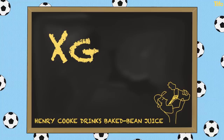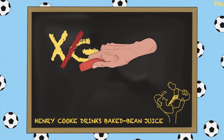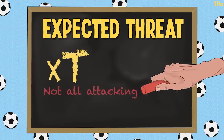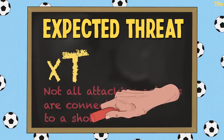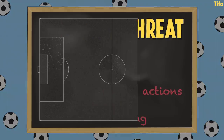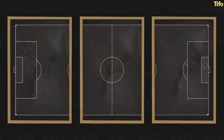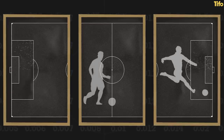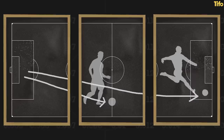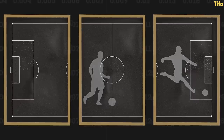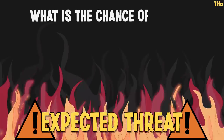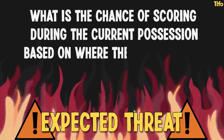For a couple of reasons, this is why XG is the wrong model to use here, and why expected threat, or XT for short, is a good solution. Not all attacking actions are connected to a shot occurring, and XT is a way of zooming out a little bit further to see more of the game. The current analytical metrics are descriptive at telling us who is attacking the opponent's goal or helping to provide those chances, but looking at how the ball gets into those dangerous positions in the first place is missing. And that's the crux of what expected threat can tell us: what is the chance of scoring during the current possession based on where the ball is now?